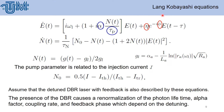We look at the Lang-Kobayashi equation presented here. The difference from many previous papers is that parameters alpha, tau, eta, and phi are treated as constant in other works. In our case, all these parameters are no longer constant but depend on the detuning. The DBR laser with feedback is also described by these equations, and we consider the external cavity detuning and look for external cavity modes.